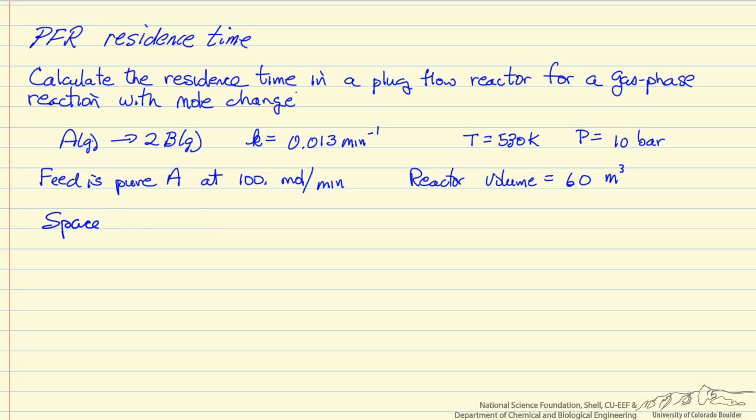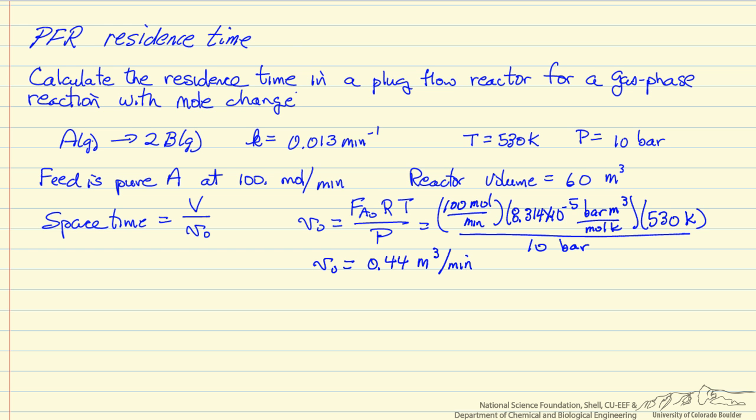The space time is the reactor volume over the inlet volumetric flow rate, and the inlet volumetric flow rate we can calculate from the ideal gas law. We have only A coming in, so this is the molar flow rate of A, the gas constant, absolute temperature over pressure. I've substituted in and checked the units are consistent. We can get the inlet volumetric flow rate, which means we can get the space time.